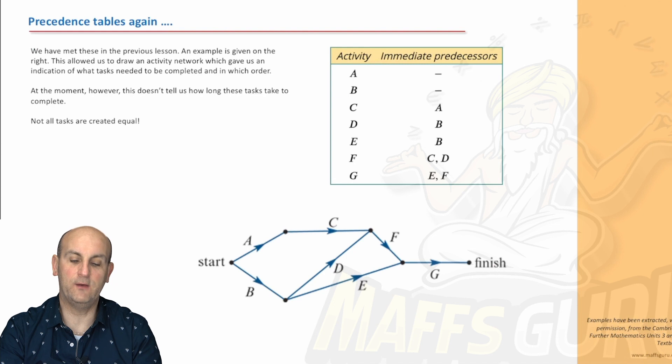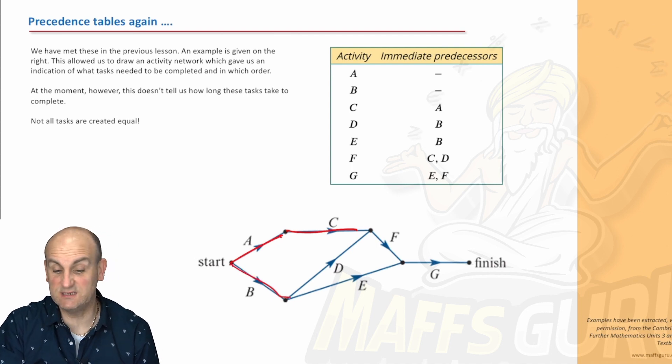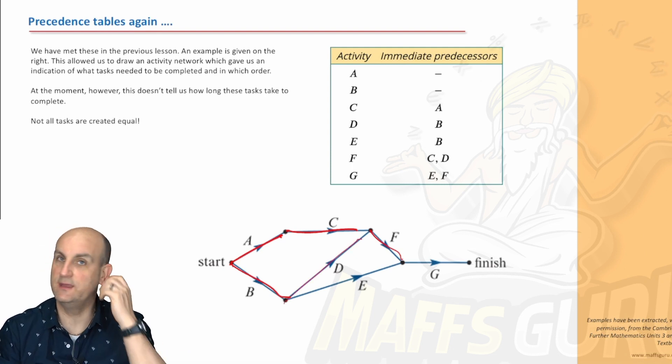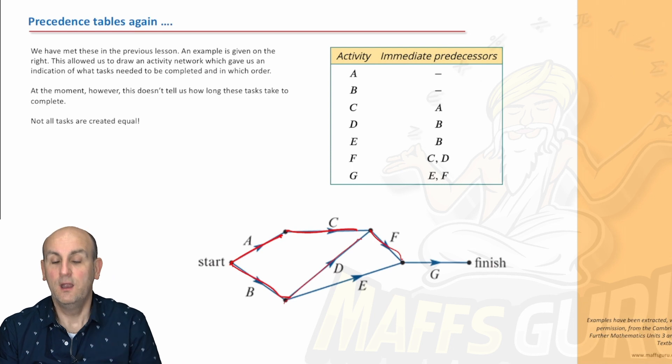Precedence tables again. In this situation here, there is a precedence table. It's a list of things to do. But it's a fairly pointless idea at this moment because it tells me that I can't start C until A is finished. I can do A and B at the same time. F can only start when C and D are finished, which is pretty much what the precedence table is telling me.